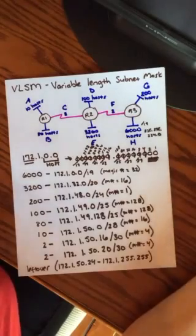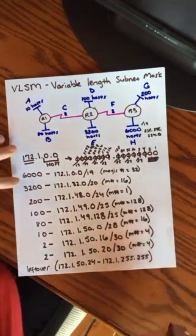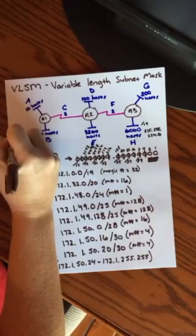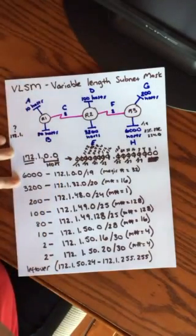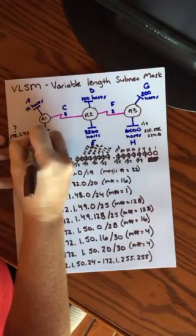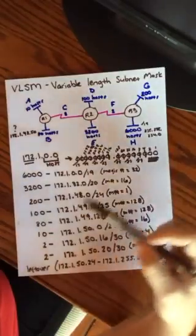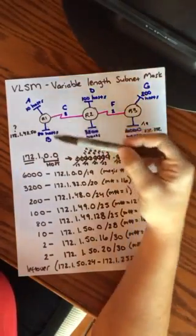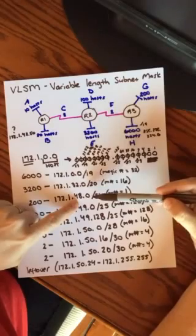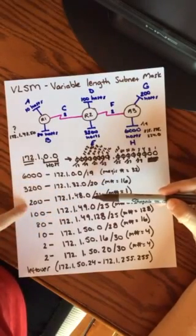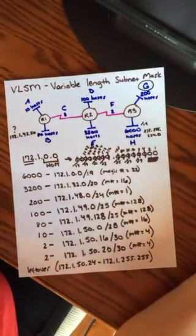So you might see a problem like, where is host 172.1.48.50? Where's that guy at? And you'd have to work out this problem in order to determine what network that host is on. Is it on the A, B, C, D, E, F, G, or H network? Well, if you look at your list, 172.1.48.50 would be on this 200 range networks. That would be on the G network. So that would be your answer, G.